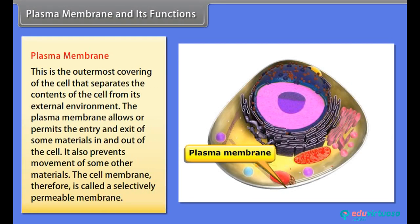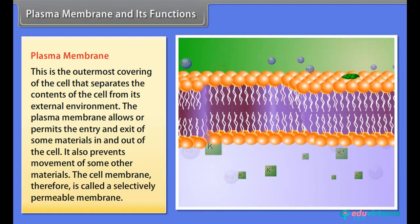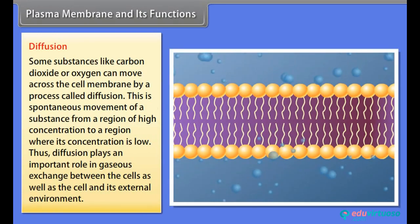The plasma membrane allows or permits the entry and exit of some materials in and out of the cell, and also prevents the movement of some other materials. The cell membrane is therefore called a selectively permeable membrane.